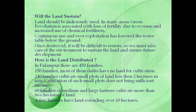How is the land distributed? In Palampur there are 450 families. 150 families — most of them Dalits — have no land for cultivation. 240 families cultivate small plots of land less than 2 hectares in size; cultivation of such small plots does not bring sufficient income. 60 families of medium and large farmers cultivate more than 2 hectares of land; a few farmers have land extending over 10 hectares.